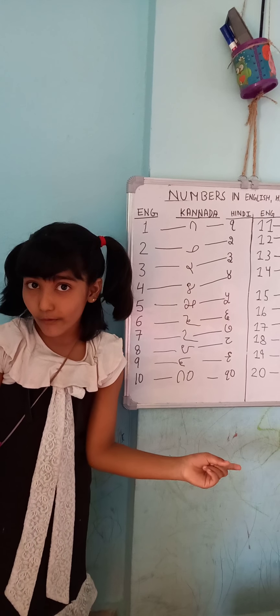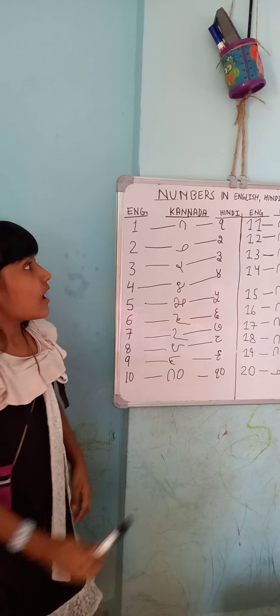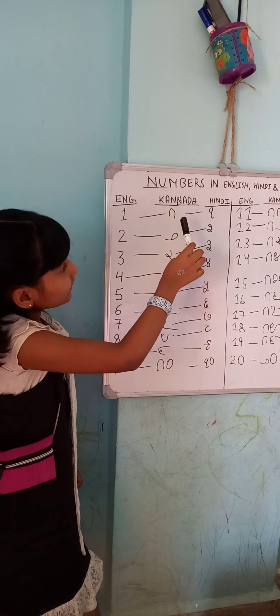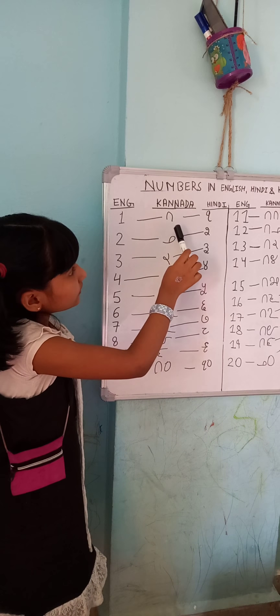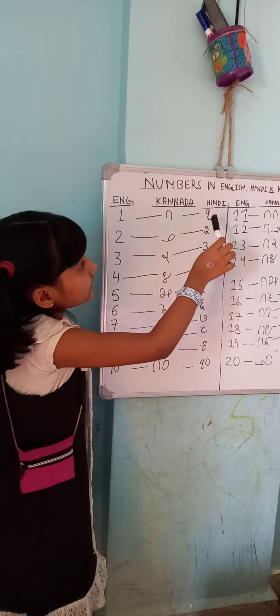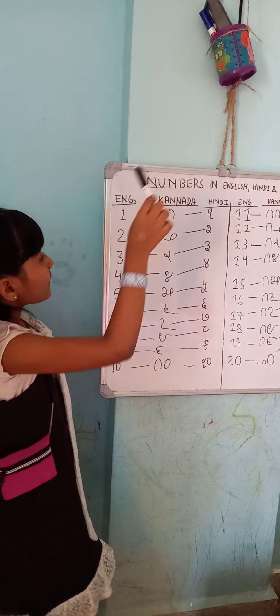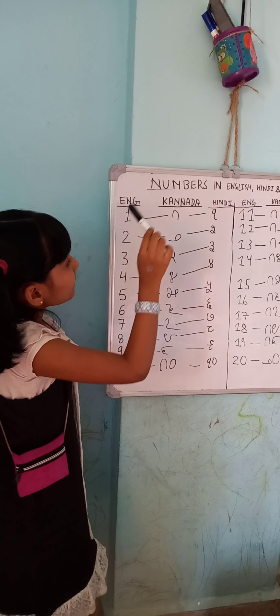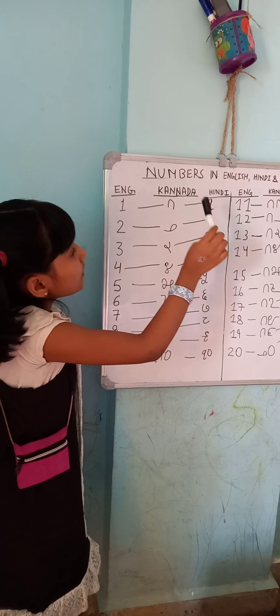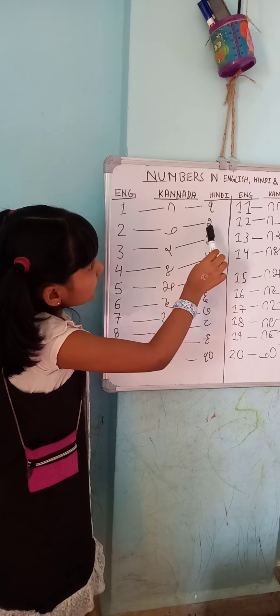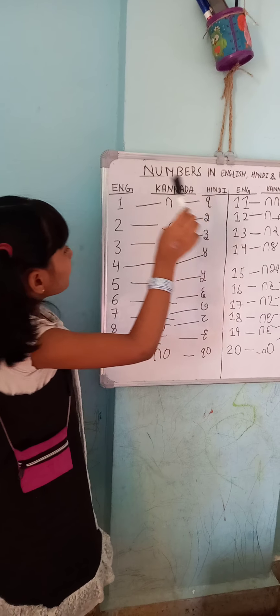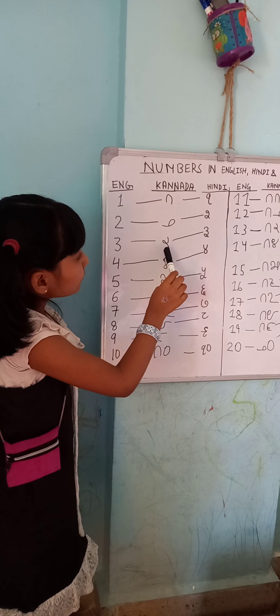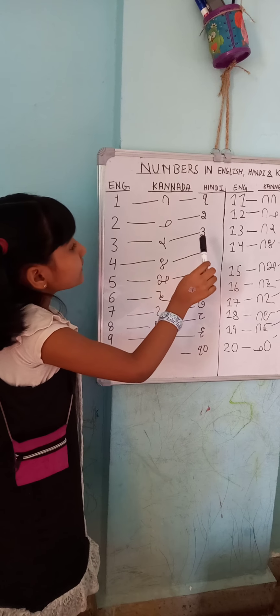So shall we start now? In English: 1. In Kannada: Vandhu. In Hindi: Ek. 2. In Kannada: Eradu. In Hindi: Do. 3. In Kannada: Muru. In Hindi: Teen.